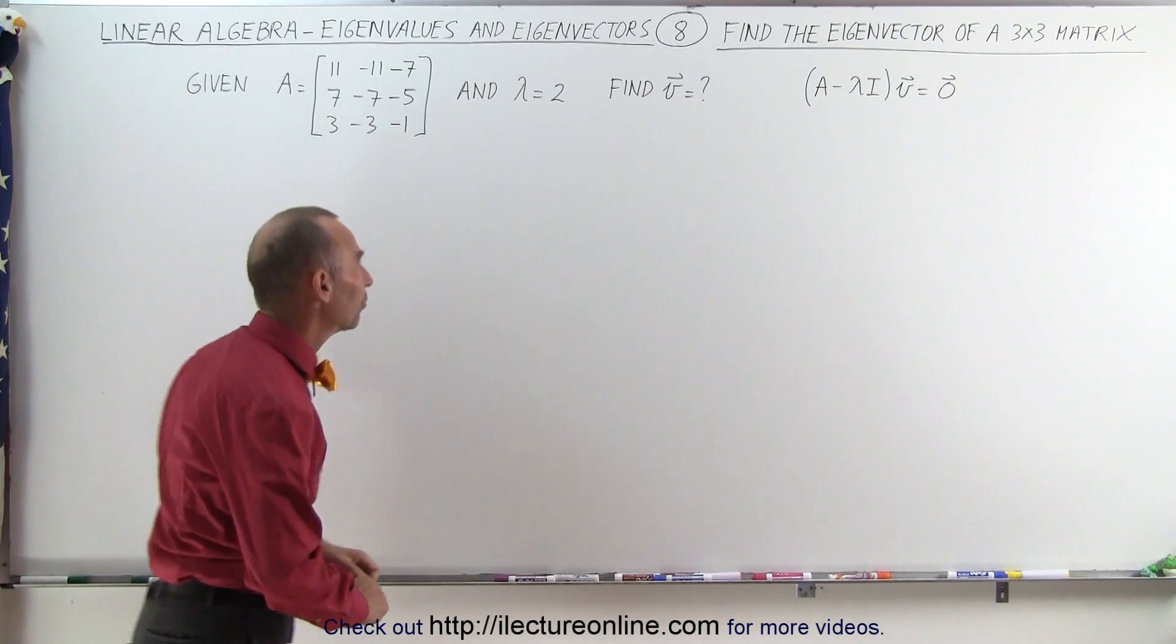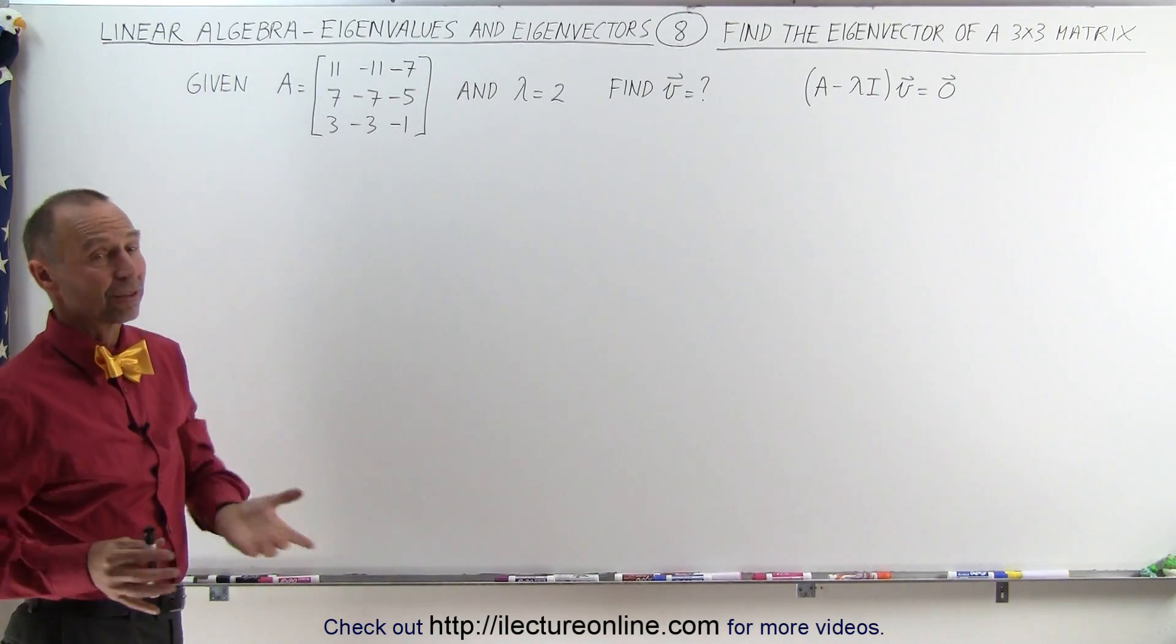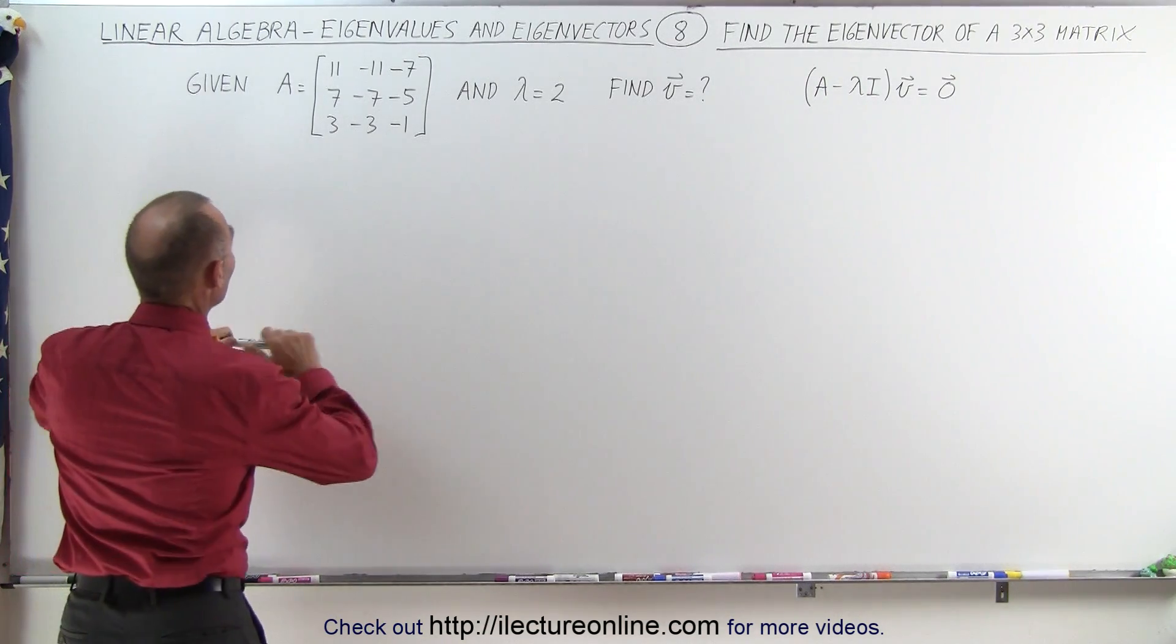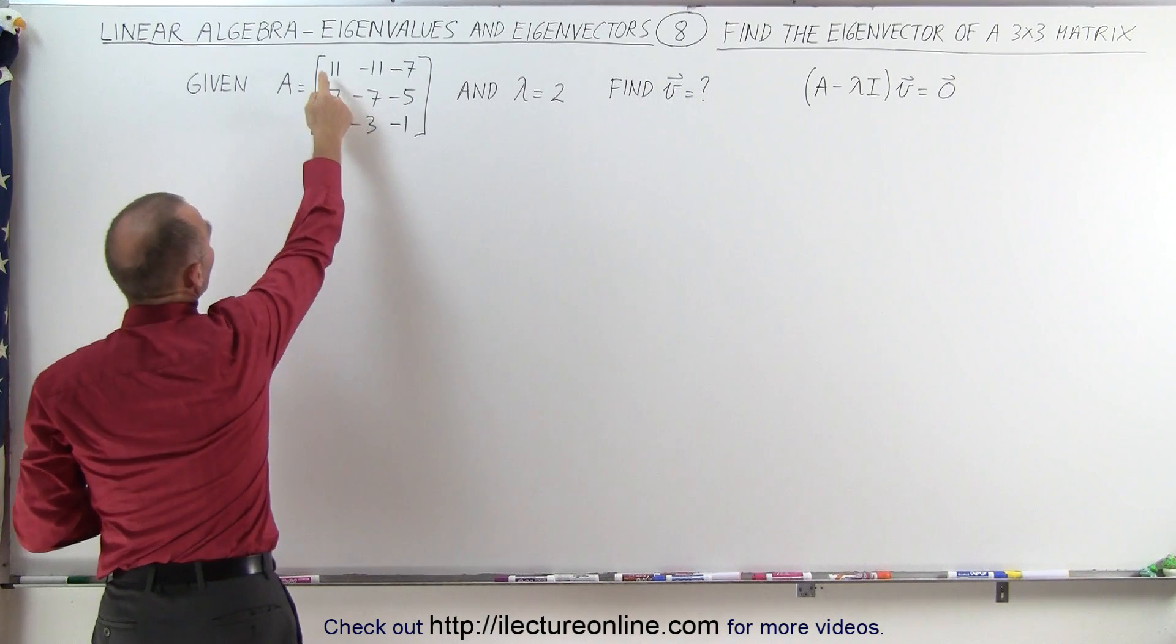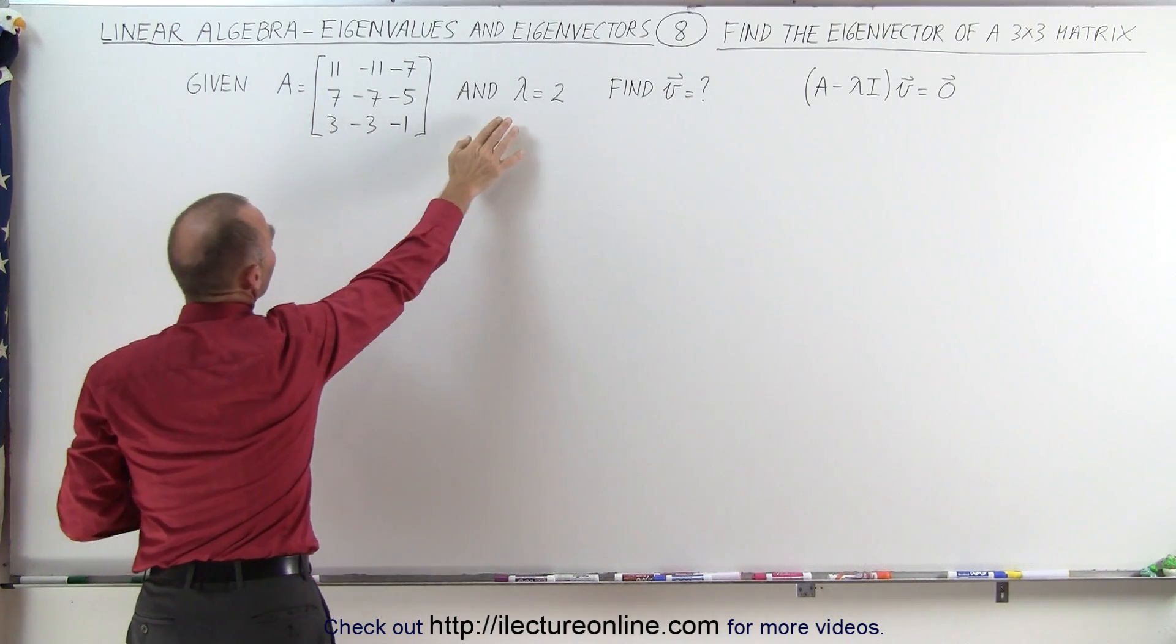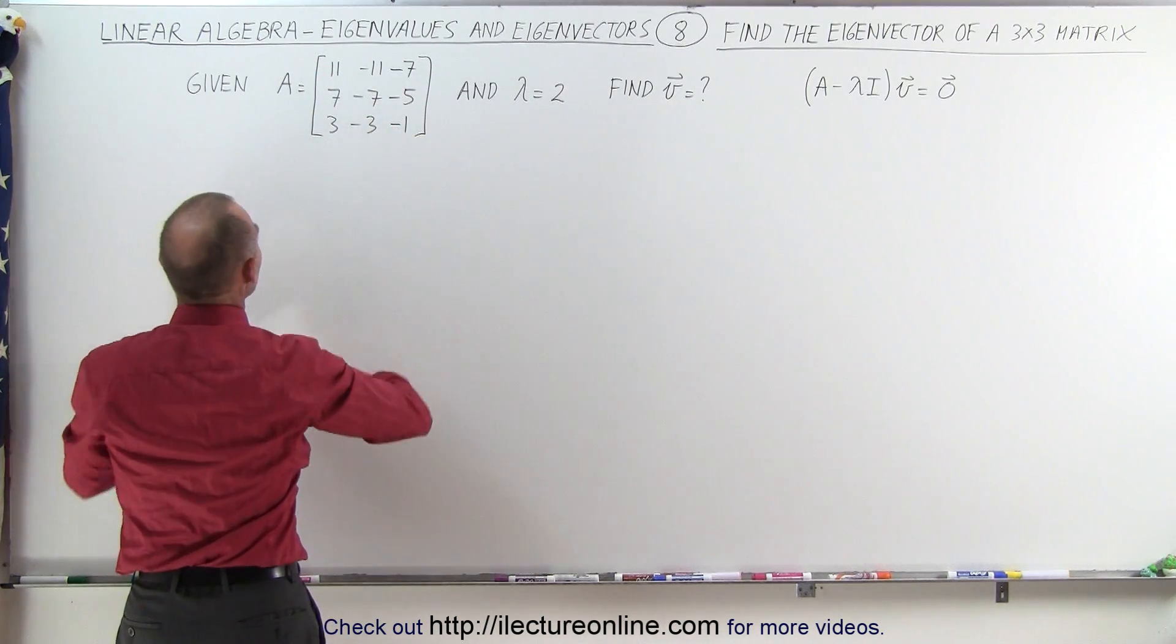So we use the same approach as before, just a little bit more work since it's a 3 by 3 matrix. So let's do that now, let's subtract the eigenvalue from each of the diagonal elements.